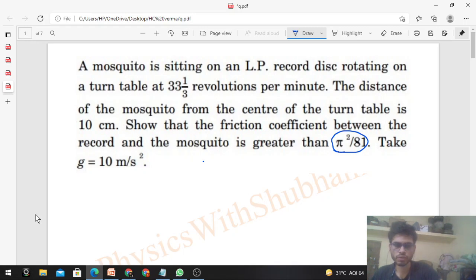So you can see a mosquito which is sitting on an LP record which is rotating. The mosquito is at rest with respect to the LP record disc, so the mosquito is rotating with the same omega.